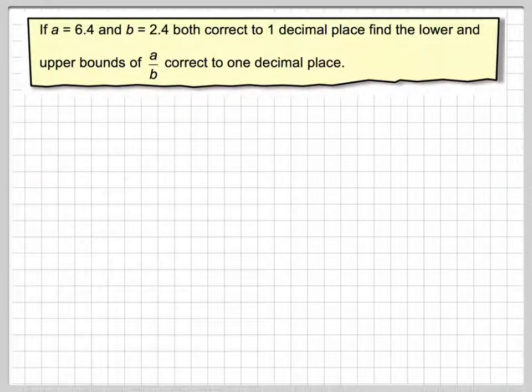In this one we're going to look at the lower and upper bounds of a division. So we've got A equals 6.4 and B equals 2.4, both correct to one decimal place. Find the lower and upper bounds of A divided by B correct to one decimal place.